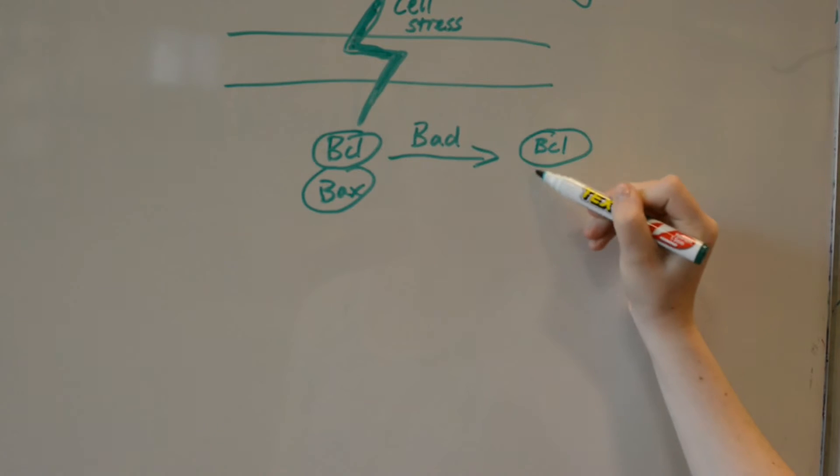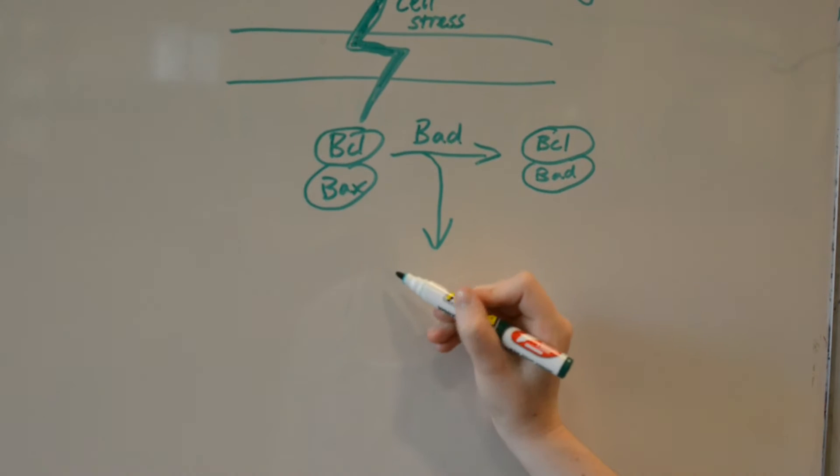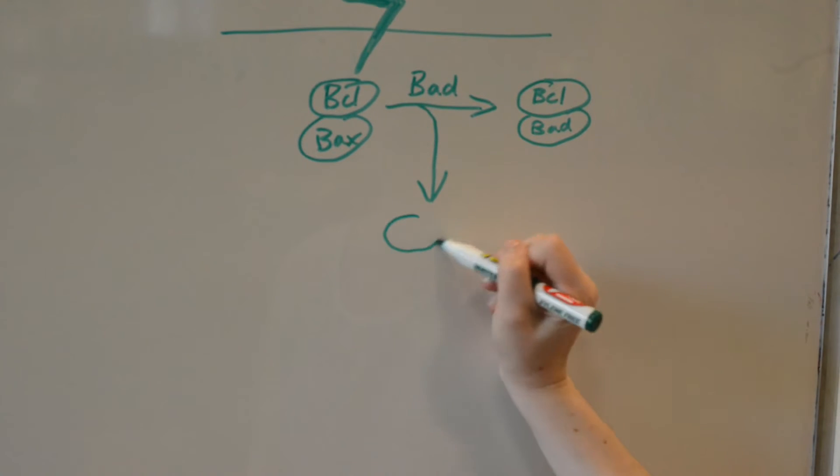The insertion of BAX and BAK proteins into the mitochondria will cause the release of pro-apoptotic proteins such as cytochrome C and apoptosis inducing factor into the cytosol.